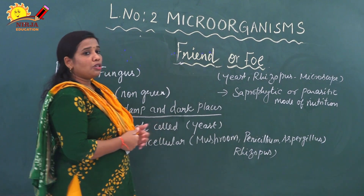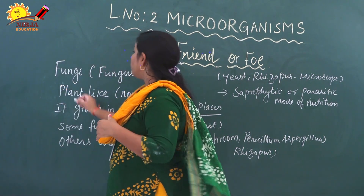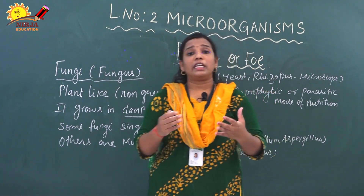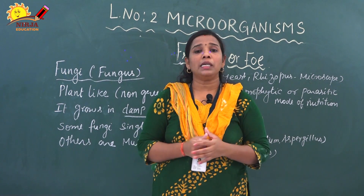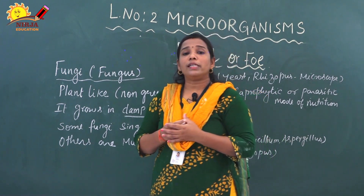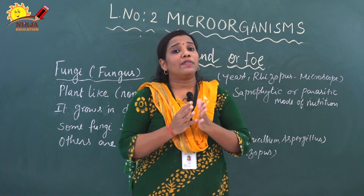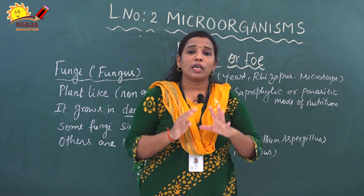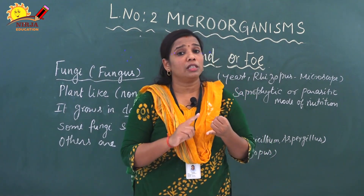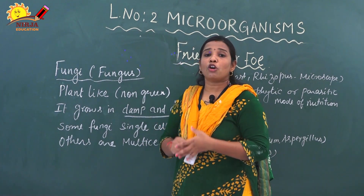This is a continuation of the major types of microorganisms. Next, we are going to discuss fungi — singular it is called fungus. It is a plant-like structure but it is non-green in color. It looks like a plant, but it does not contain chlorophyll. So chlorophyll is absent in fungi. It has a shape like stems and roots, but it is a non-green plant due to the absence of the chlorophyll pigment.